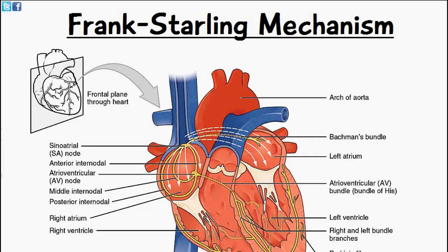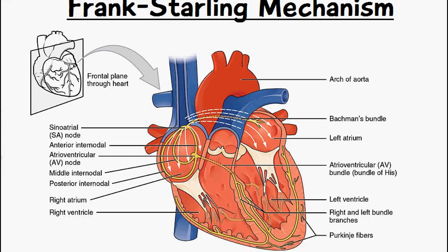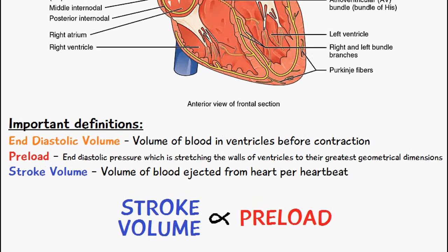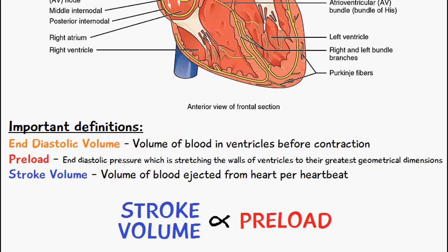Before we discuss it in more depth, we need to know the following definitions. End diastolic volume is the volume of blood in the ventricles before contraction. Preload is the end diastolic pressure which is stretching the walls of the ventricles to their greatest geometrical dimensions — it is the pressure on the cardiomyocytes of the wall of the heart due to the amount of blood in the ventricles.